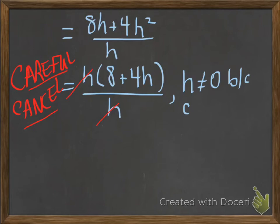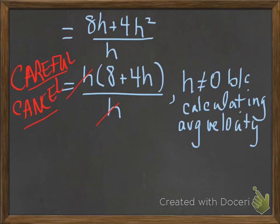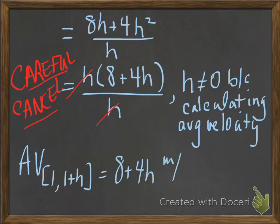Let's think about what h means. h is the length of our interval on which we are calculating the average velocity. What we know about average velocity is we have to compute it on an interval that has a non-zero length. So that is why h cannot be 0, because we're calculating average velocity on the interval 1 to 1 plus h. So my conclusion after my careful cancel is that the average velocity on the interval from 1 to 1 plus h is 8 plus 4h, and my units are meters per second.